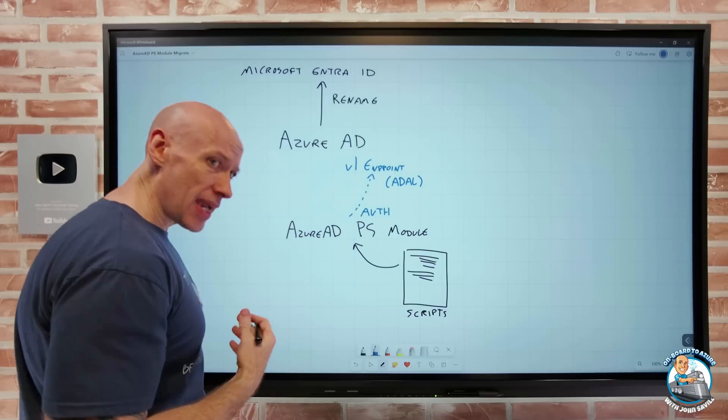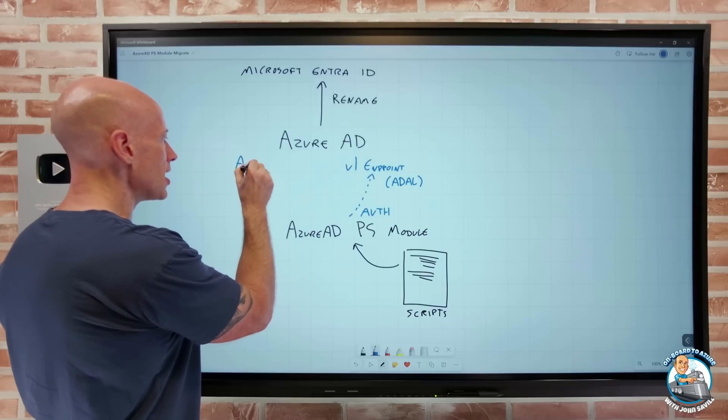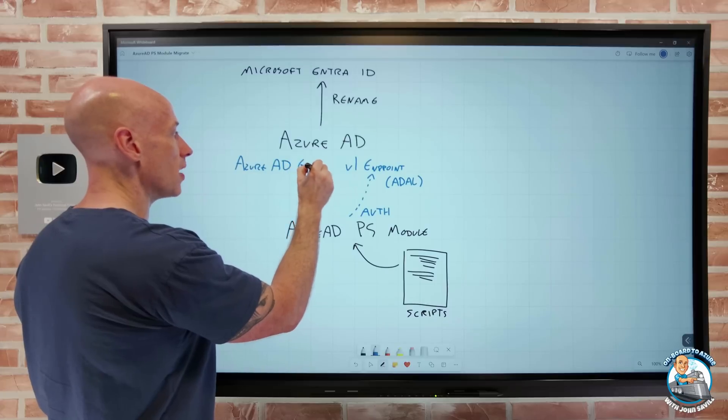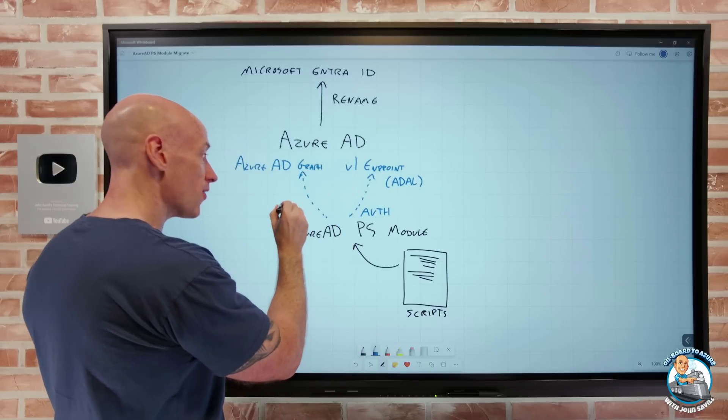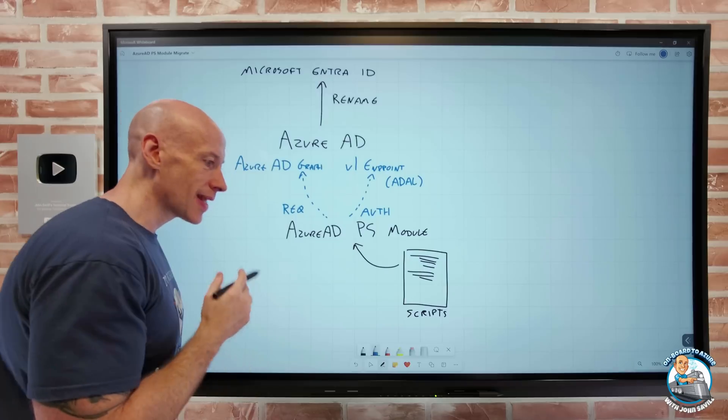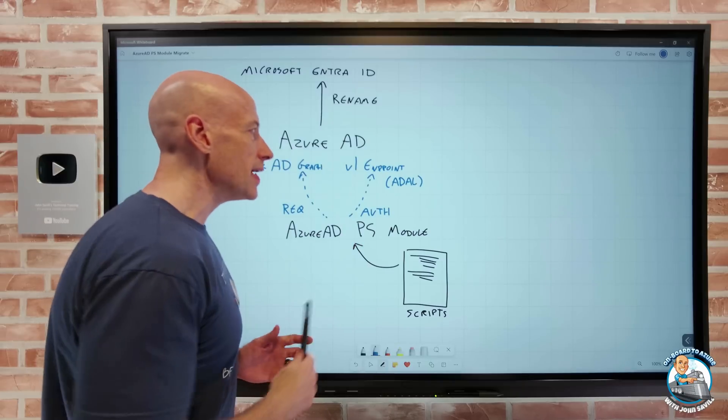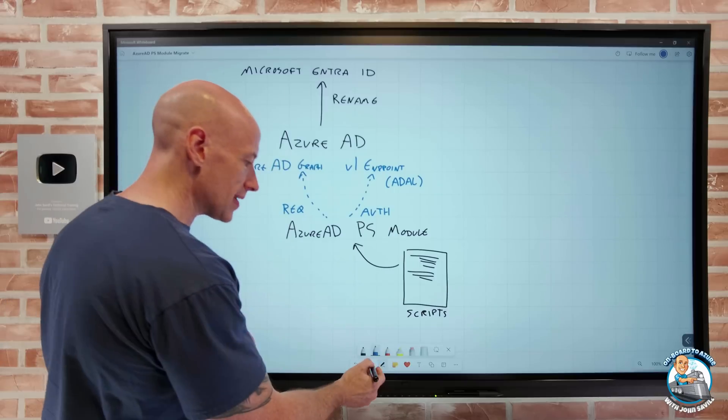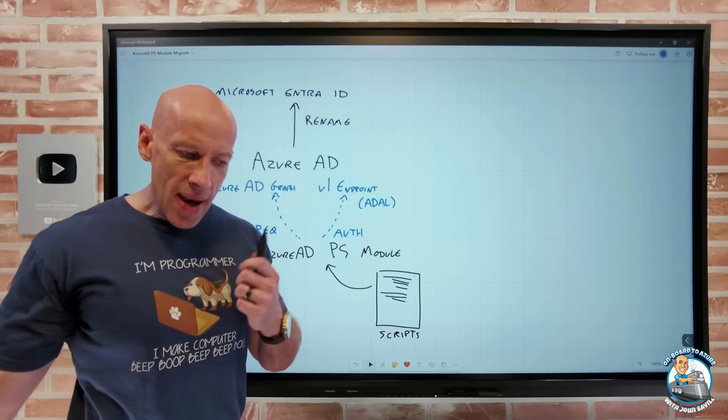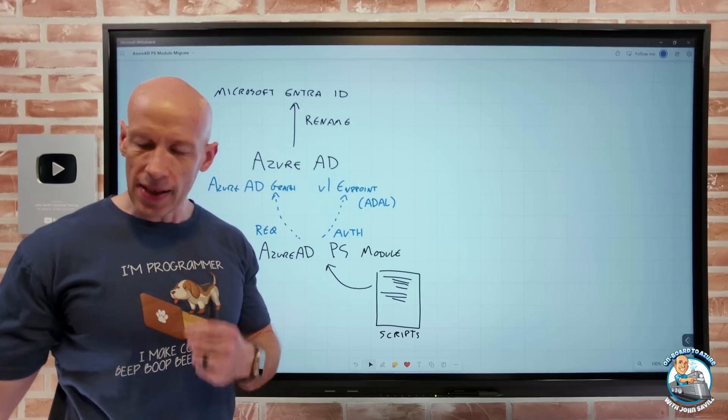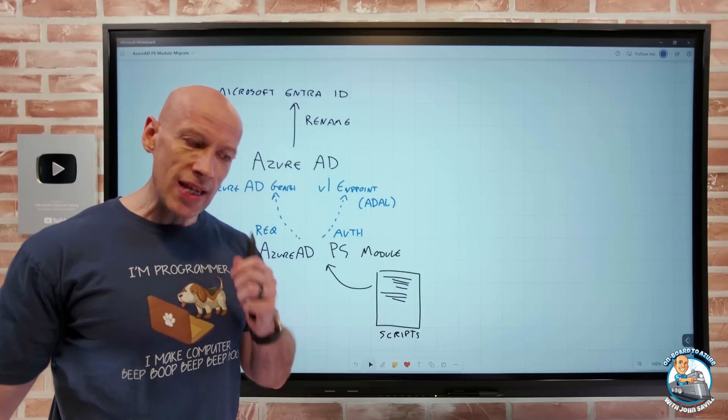Then to actually get information after I'd done authentication to get my token, we worked against the Azure AD Graph API. The key point here is these only worked against Azure AD. This authentication endpoint could only work against Azure Active Directory. Obviously the Azure AD graph was limited to only talking to Azure AD. But there were many other cloud platforms out there from Microsoft: Microsoft 365, Dynamics 365, Microsoft personal accounts, B2C.